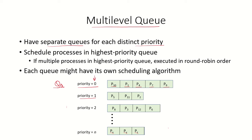Lower priority processes such as P5, P11, and P2 can be kept in Q1, which is another ready queue for slightly lower priority processes. All processes in the highest priority queue will be scheduled first. Processes with lower priority will be scheduled only after all processes in higher priority queues have finished. So only when processes in Q0 have been scheduled will processes in Q1 be scheduled.